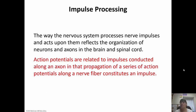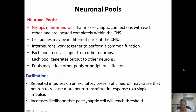The way the nervous system processes impulses and acts upon them reflects how it's organized. The brain and spinal cord have a specific organization for processing impulses. Action potentials are related to impulse conduction because the propagation of a series of action potentials along the nerve fiber makes up an impulse. Neuronal pools are groups of interneurons — the neurons in the central nervous system that make the connection between sensory and motor. Each pool receives input from other neurons and generates output to other neurons, and pools may affect other pools or peripheral effectors.